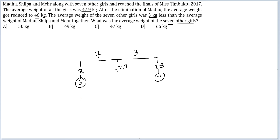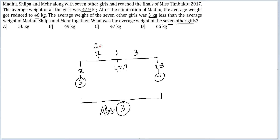Notice this: the entire range has an absolute value of 3, which has to be divided in the ratio of 7 to 3. So this will be 2.1 and this will be 0.9. Therefore, the value of X is 50 — that is 47.9 plus 2.1 — and the value of X minus 3 is 47.9 minus 0.9, which is 47. The answer to this question is option C, 47.